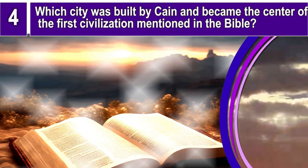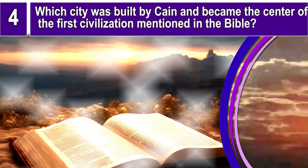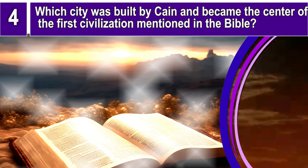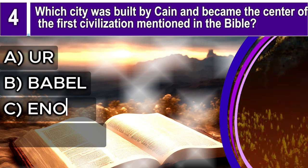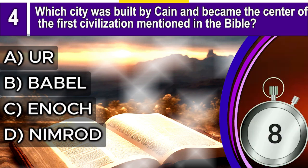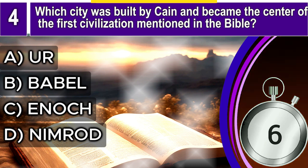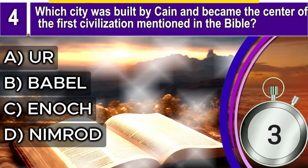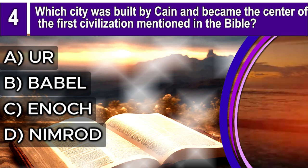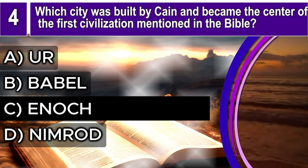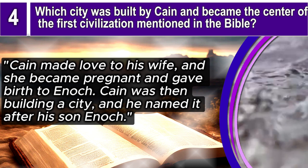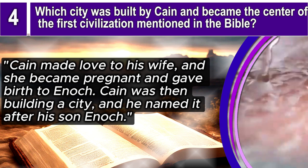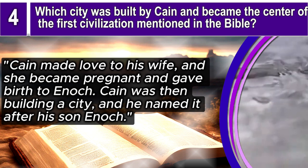Question 4. Which city was built by Cain and became the center of the first civilization mentioned in the Bible? A. Ur, B. Babel, C. Enoch, D. Nimrod. The correct answer is C. Enoch. Genesis 4, verse 17 says: Cain made love to his wife, and she became pregnant and gave birth to Enoch. Cain was then building a city, and he named it after his son Enoch.